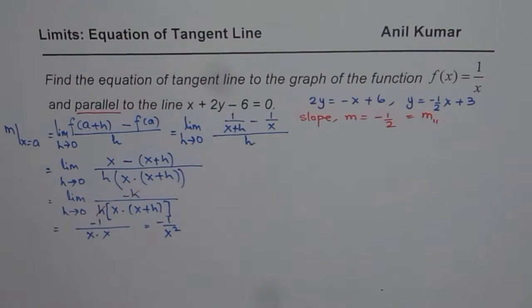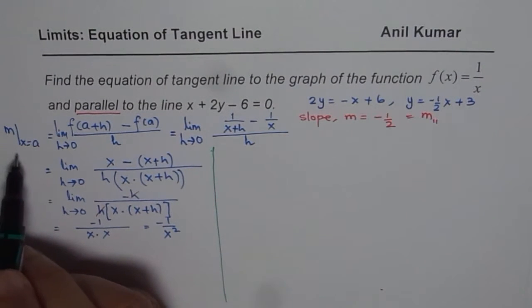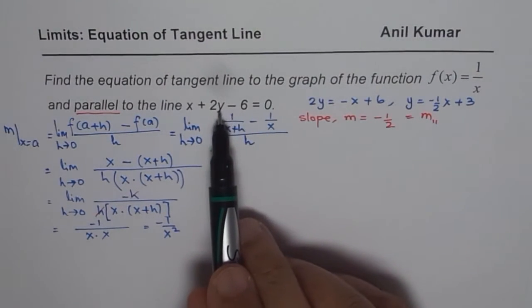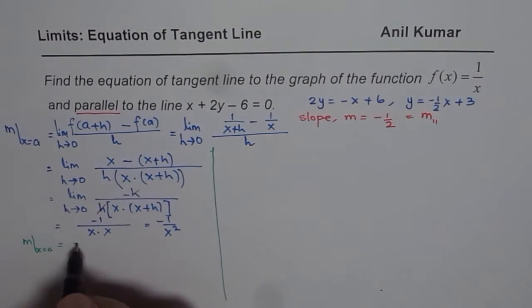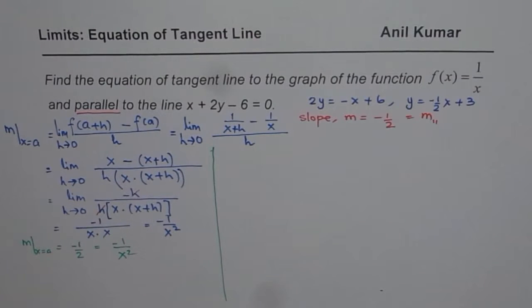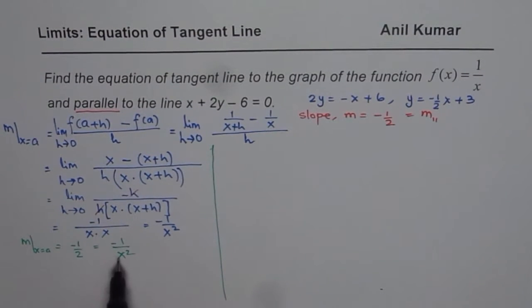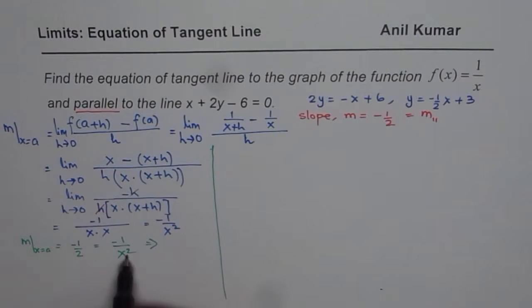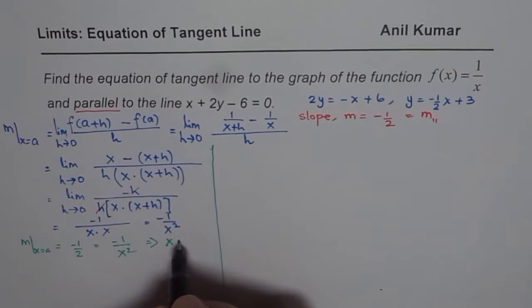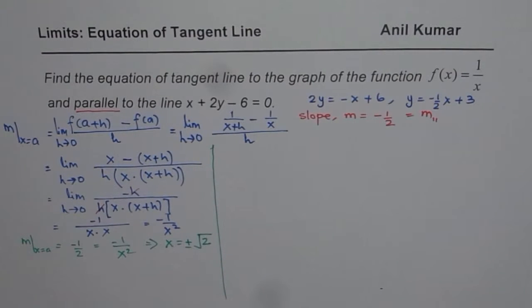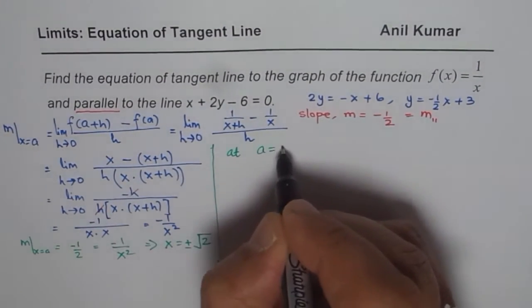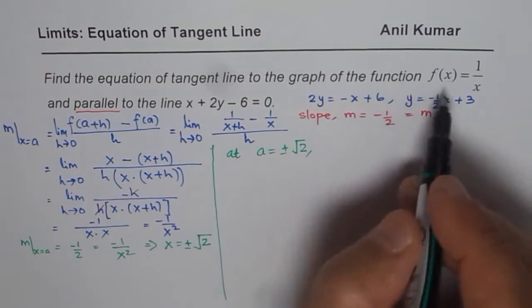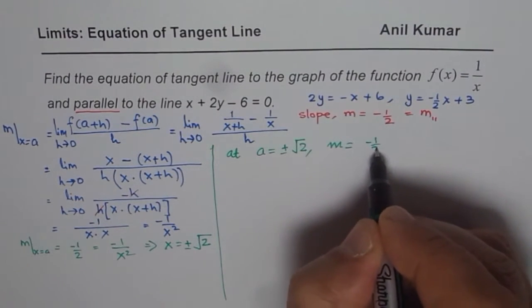Now we need to find the point where the slope equals -½. We set -1/x² = -½, and solve for x. From this, we get x² = 2, so x = ±√2. Therefore, at a = ±√2, the slope of the tangent line on the graph of this function equals -½.